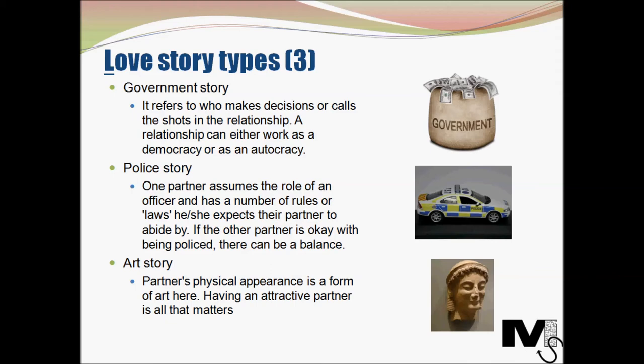The next story type is the police story. Most of us have come across relationships wherein one partner seems to be exerting a lot of control over the other. Exerting control is a characteristic of people following the police story. Here, one partner assumes the role of officer or enforcer and has a number of rules that he or she expects their partner to abide by. The officer in the relationship usually believes that following the rules is for their partner's own good. If the other partner is okay with constantly being policed, the relationship can be balanced — otherwise it can be very unbalanced.